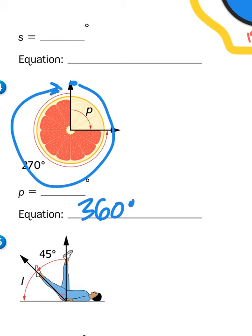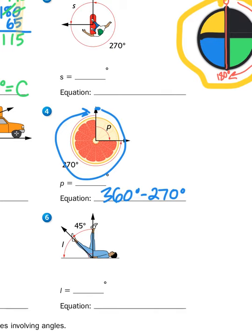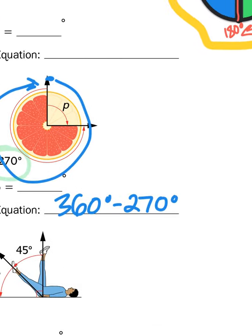Now, the measurement of how much grapefruit is left is 270 degrees, as we can see right here. So my leftover, or my difference, is going to be the difference between 360 minus 270.